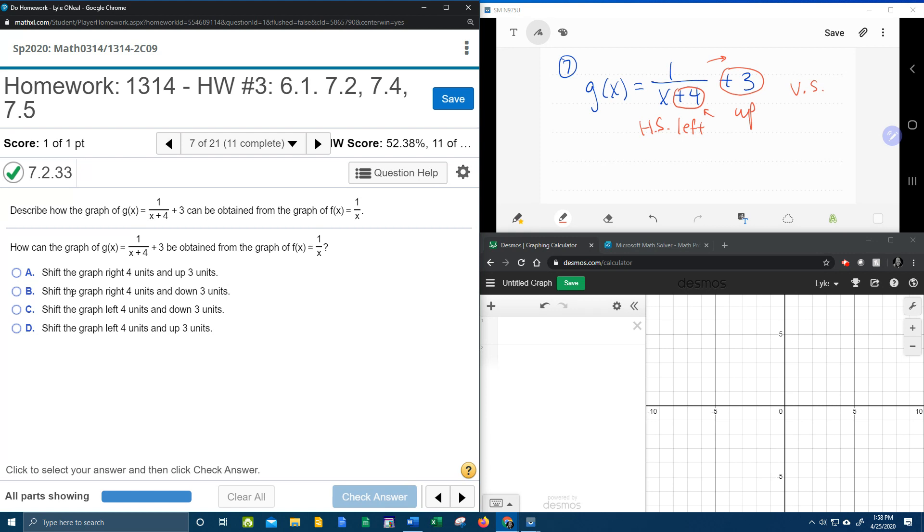Let's see what we've got over here. Shift the graph, what do we say, left 4, up 3. That looks like answer choice D, check it, and that's all there is to that.